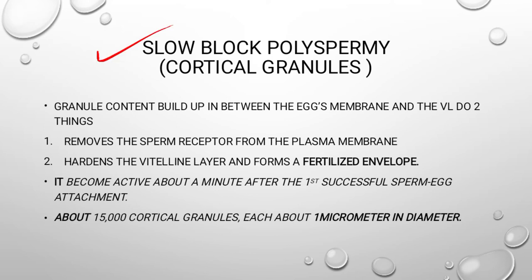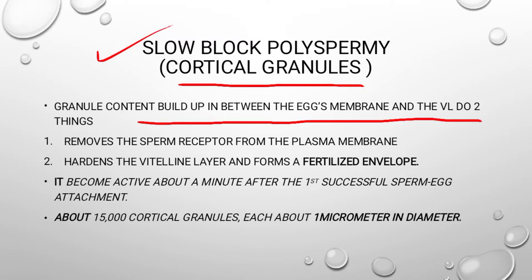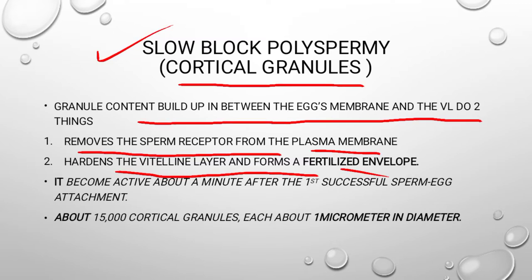Next, the slow block of polyspermy. Remember: the slow block of polyspermy is done by the cortical granules. The granule contents build up between the egg's membrane and the wall. They do two things: they remove the sperm receptors from the plasma membrane, and they harden the vitelline layer, forming a fertilization envelope. Special receptors present on the plasma membrane that recognize sperm are removed, and the vitelline layer is hardened so that a special envelope forms and sperm entry is blocked.